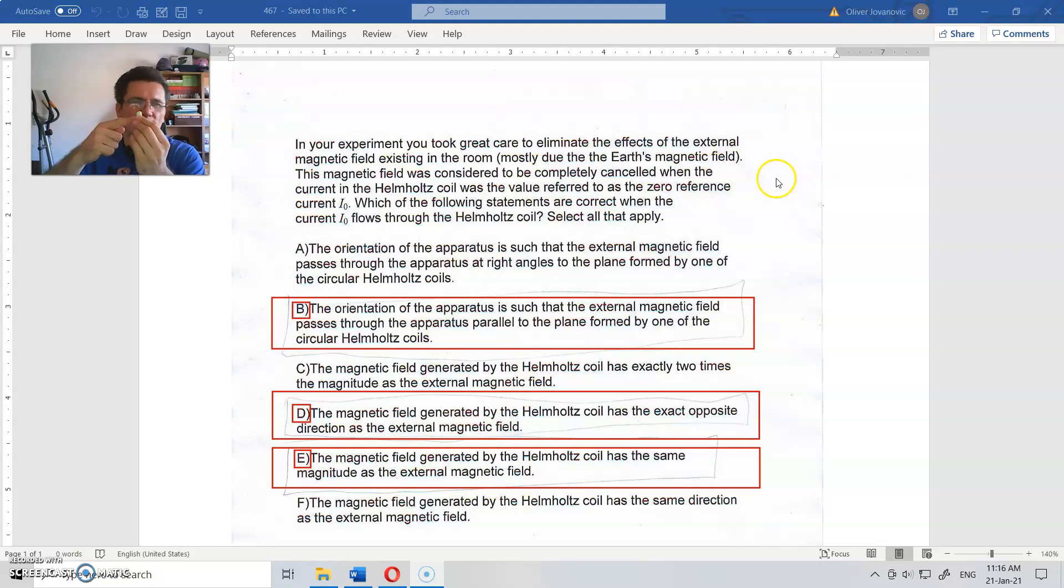You cannot cancel this field, but what you can do with this apparatus is you could make another one in the opposite direction that you hold that magnet in its place. The orientation of the apparatus is such that the external magnetic field